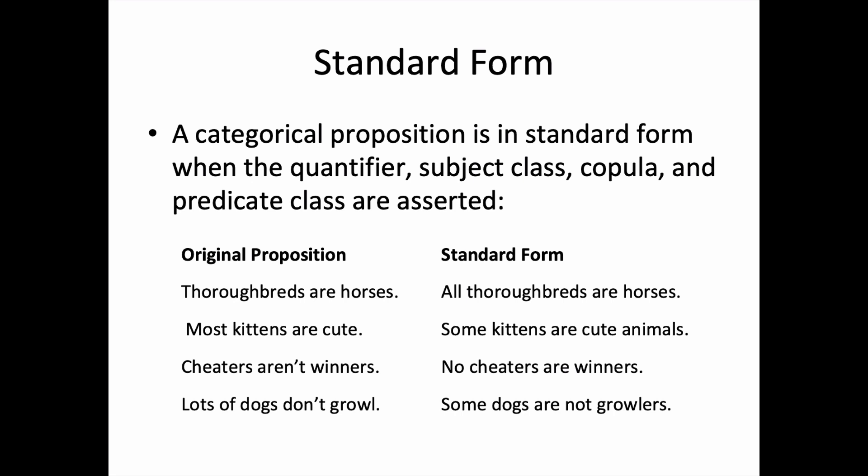Here are examples of propositions converted to standard form. 'Thoroughbreds are horses' becomes 'all thoroughbreds are horses.' 'Most kittens are cute' becomes 'some kittens are cute animals.' 'Cheaters aren't winners' becomes 'no cheaters are winners.' 'Lots of dogs don't growl' becomes 'some dogs are not growlers.'